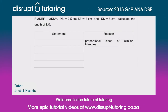Hey guys, it's Jed here from Disrupt Tutoring — always a pleasure to join you today. We've got quite an interesting question involving similarity, and we need to figure out the length of one of the sides. They've said triangle DEF is similar to triangle KLM, and that DE is 2.5 centimeters, EF is 7 centimeters, and KL is 5 centimeters.